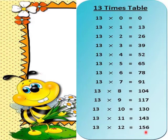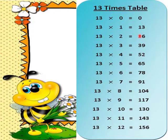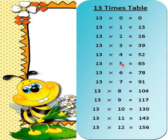Again we will speak. 13 times 0 is 0. 13 times 1 is 13. 13 times 2 is 26. 13 times 3 is 39. 13 times 4 is 52. 13 times 5 is 65.